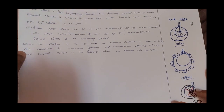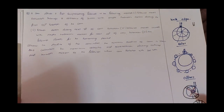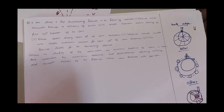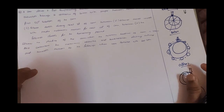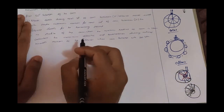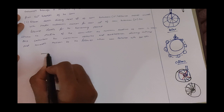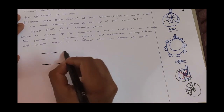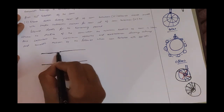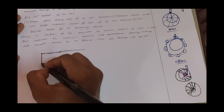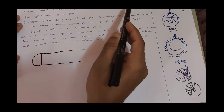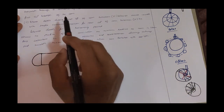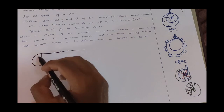Now we have to take a look at the cam problem. A cam drives a flat reciprocating follower in the following manner: the follower moves outwards through a distance of 20mm with simple harmonic motion during the first 120 degrees rotation of the cam. Let's take a look at this — this is the semicircle.